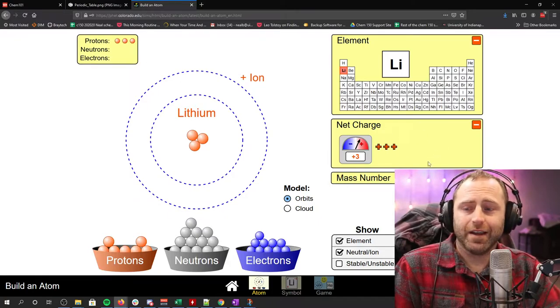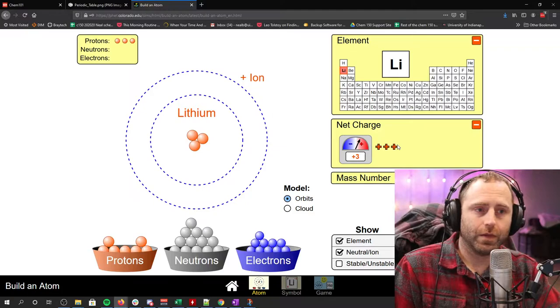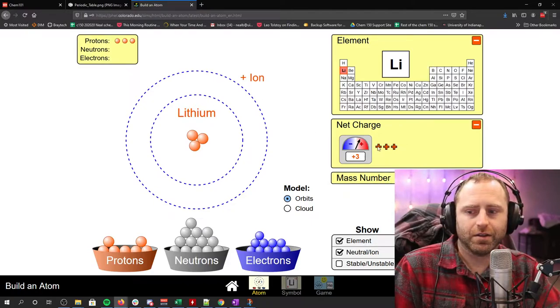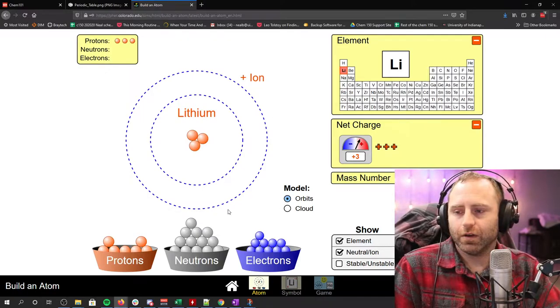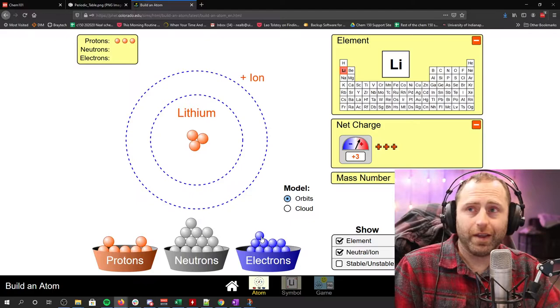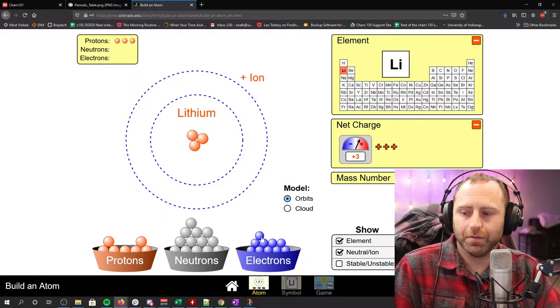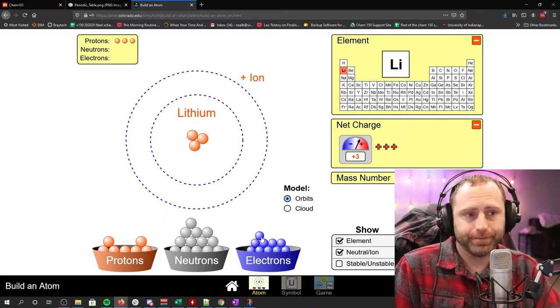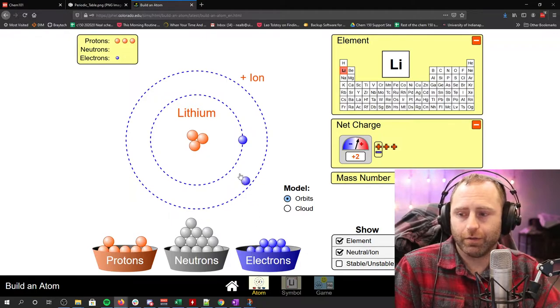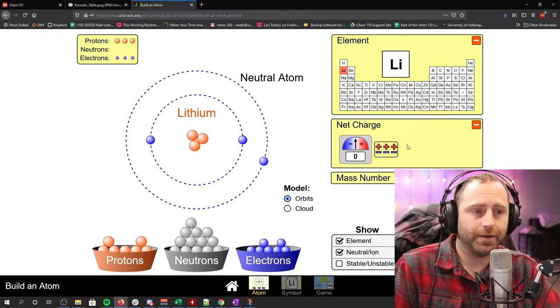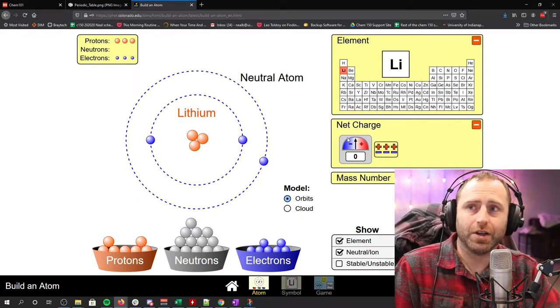We also have this net charge calculator down here. So right now, if we only have three protons and we have no electrons, we have three plus three charge. To get rid of that, lithium in nature is highly reactive, but the metal form of lithium is neutral. In order for it to be neutral, you have to have one, two, three electrons in there. And if we have that, we now have a net charge of zero.